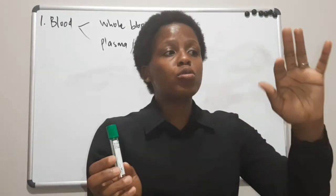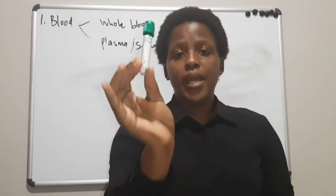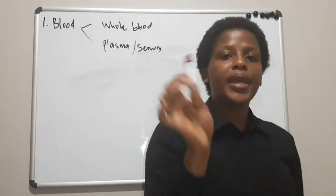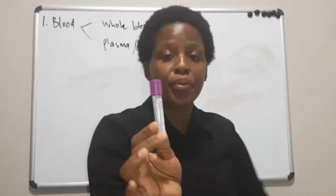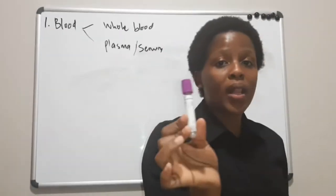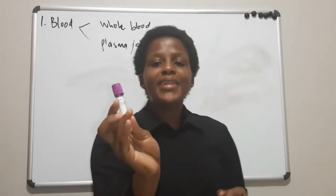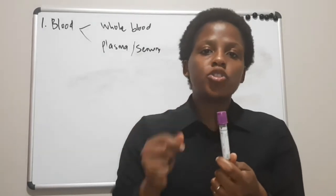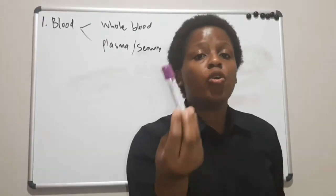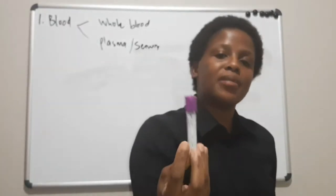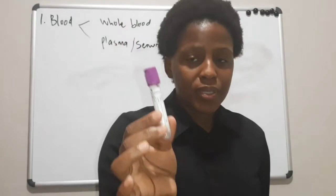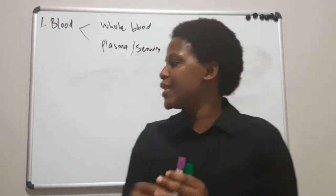After the heparin tube, we have the EDTA tube, which is the purple tube. The EDTA tube also gives us plasma, because EDTA is an anticoagulant. EDTA binds to calcium permanently, and calcium is needed in the clotting process. If the calcium is bound, the blood can't clot, so at the end of the day we are left with plasma.